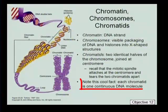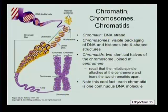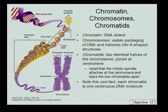Each one of those chromatids is one continuous DNA molecule. Recall in module 3 we looked at the size of that DNA molecule — it's an incredibly large structure. Just to give you an idea, the largest human chromosome, chromosome 1, contains 247 million base pairs of DNA.